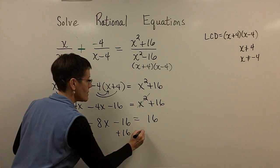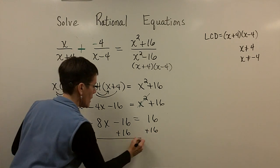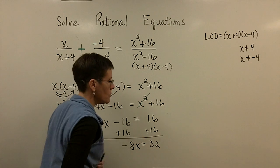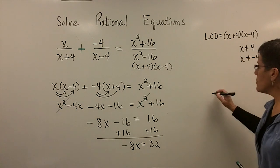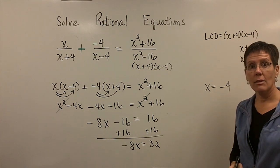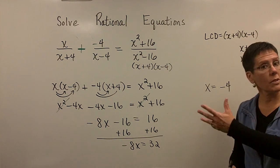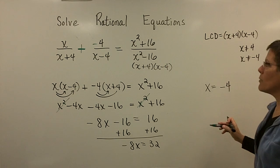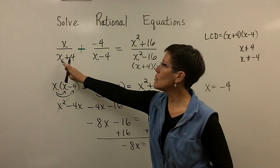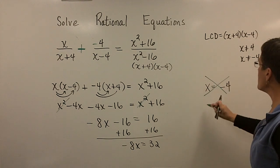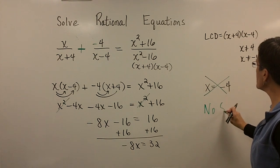So I'm going to add 16 to both sides, and so finally I have minus 8x equals 32. When I divide both sides by negative 8, I find out that x equals negative 4. That's my solution to this problem through this process. But look at my restrictions on my domain. x is not allowed to be 4 or negative 4, because when you go to check it right here, you're going to get 0 in the denominator.